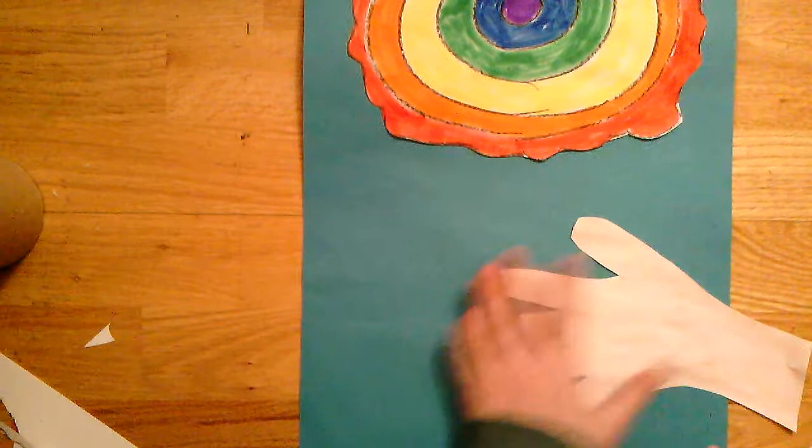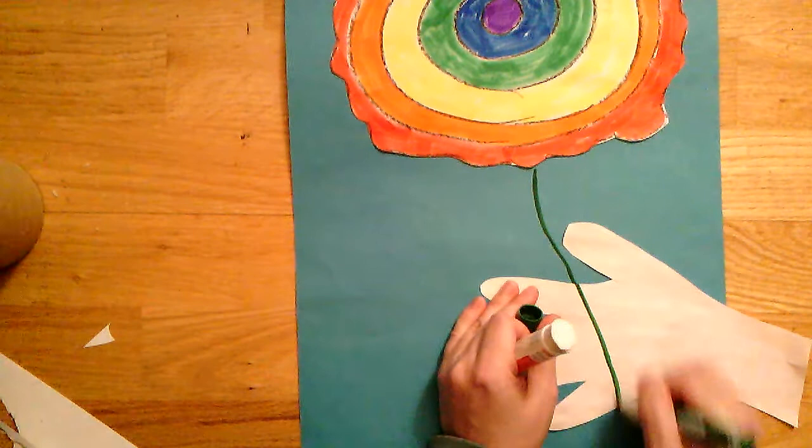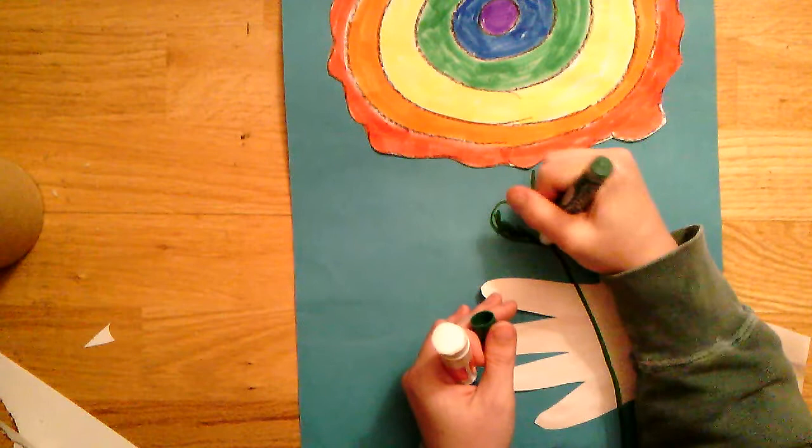Then what you want to do is take a green marker and you are going to draw a stem coming down your hand, down through the paper. And then if you want to draw a little leaf and color it in, you can.